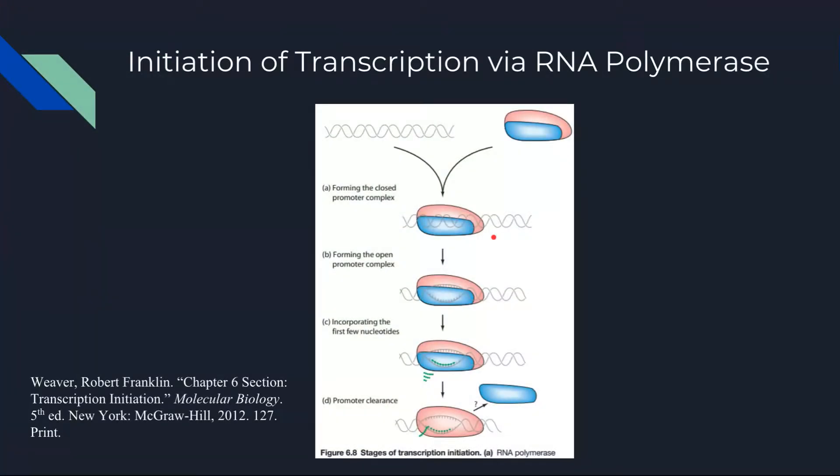Before we can discuss the experiment, let us first establish the general mechanism for transcription as background. Transcription is the process that takes the genetic information stored in DNA and produces an RNA copy of it. This process utilizes the enzyme RNA polymerase to accomplish this task. Transcription can be broken down into three parts: initiation, elongation, and termination.